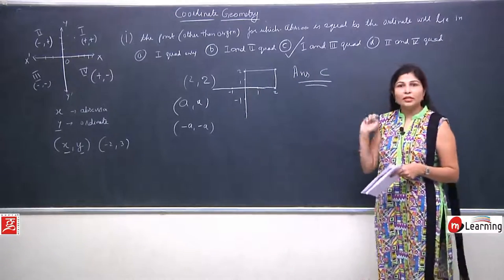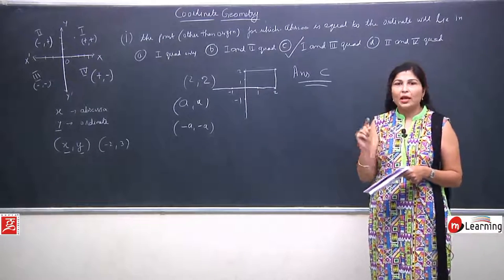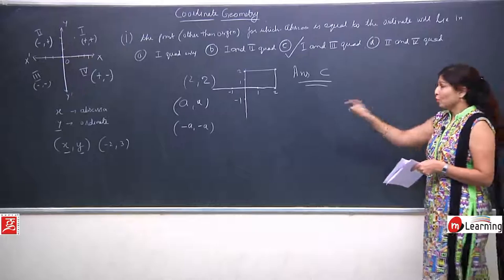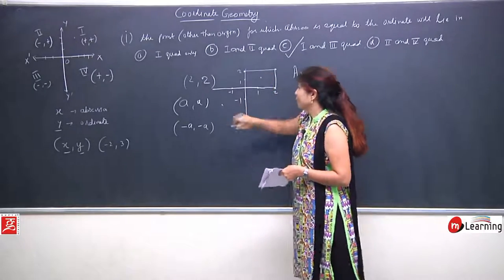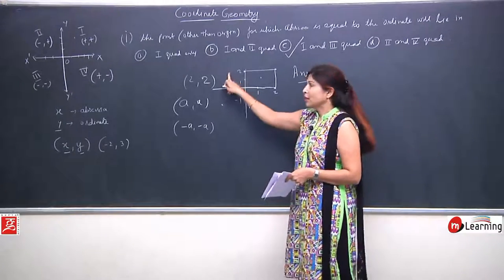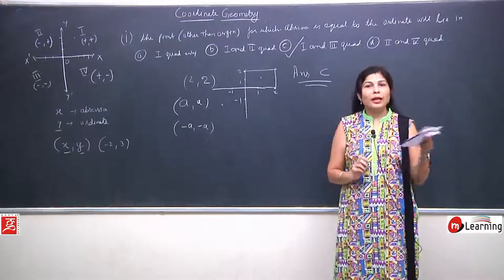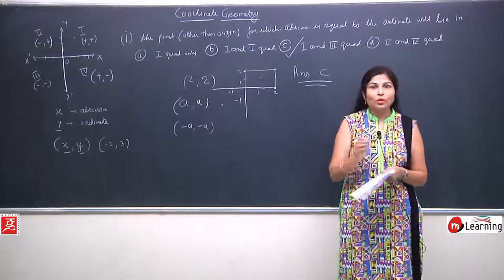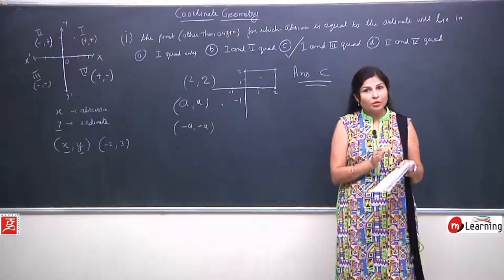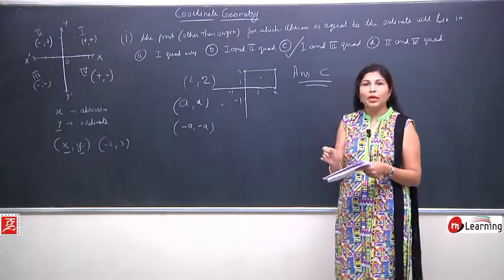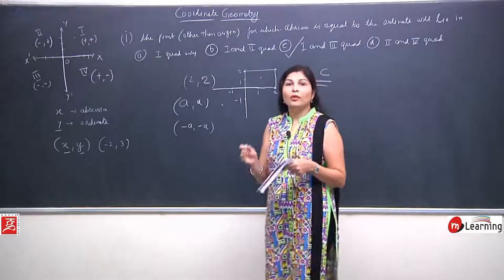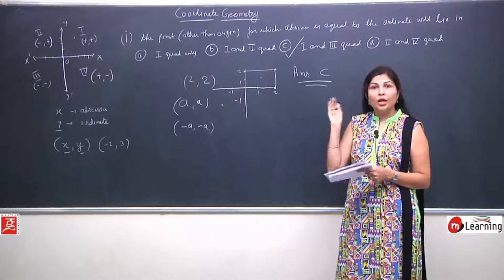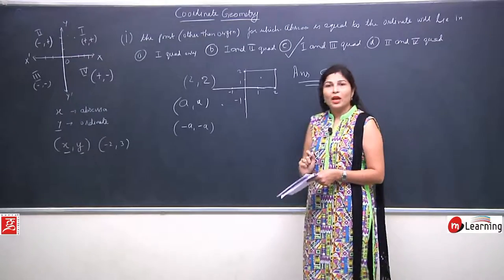So 'a' and 'minus a' — 'a' kahan lie karega wahi hamara answer hoga. Jab dono positive honge toh woh first quadrant mein lie karenge, and jab dono negative values honge toh third quadrant mein. Is question mein saath mein dono values equal bhi hain — numeric value same hai — like x 'a' hai toh y bhi 'a', x minus 'a' hai toh y bhi minus 'a'. Toh is question ke according hamara answer C hai — first and third quadrant — because abscissa aur ordinate equal hote hain toh ya first ya third quadrant mein hi lie karenge.